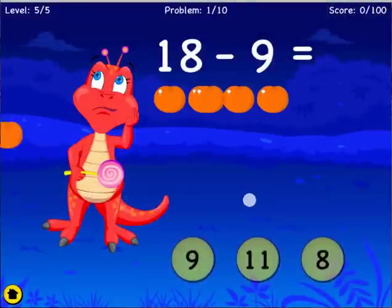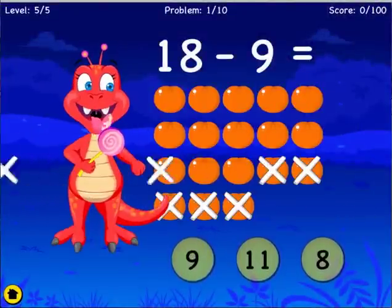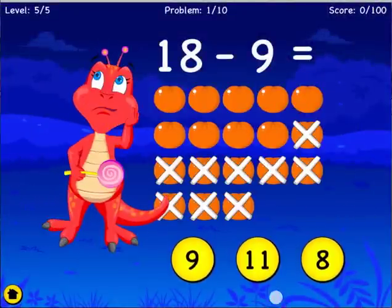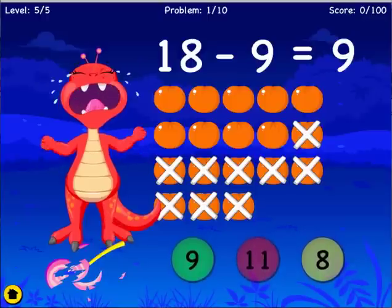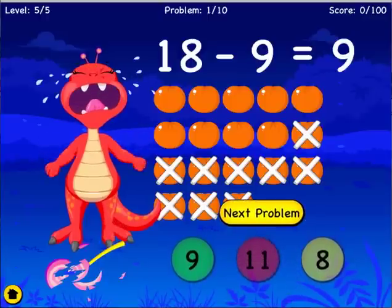What is eighteen minus nine? Oops, incorrect. Eighteen minus nine equals nine.